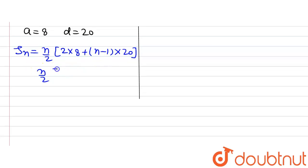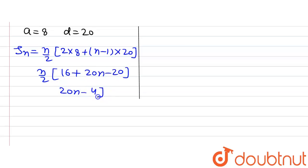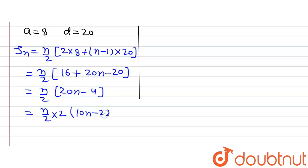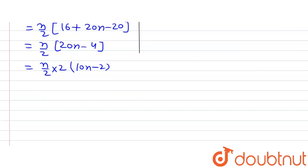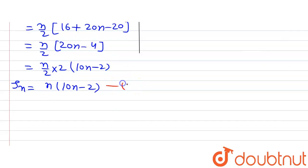So the sum of first n terms is n divided by 2 times (16 plus 20n minus 20), which gives us n divided by 2 times (20n minus 4). Taking 2 as common, we get n by 2 multiplied by 2 multiplied by (10n minus 2), which gives us: sum of n terms equals n times (10n minus 2). Let's name this equation 1.